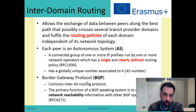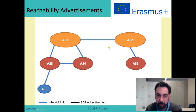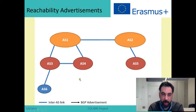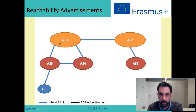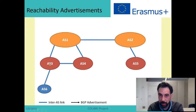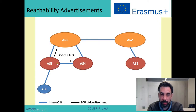Let's look at a very simple topology. We have several autonomous systems connected together. AS3 is connected to AS1 and AS4. Now, if I send a packet from AS6, which is the path that we actually follow towards AS5, and how do we learn this path? In this case, AS3 will announce that it is connected to AS6.